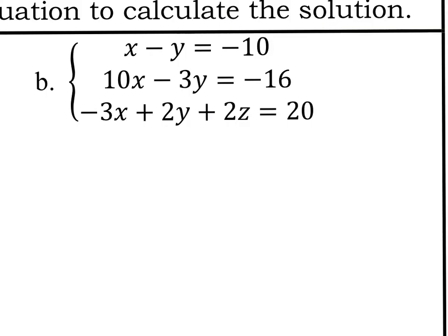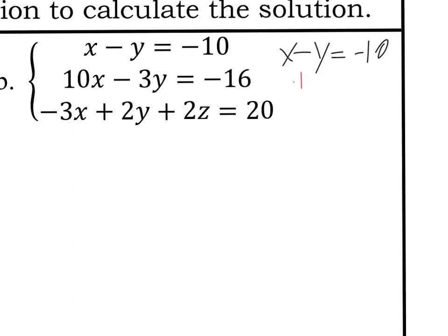So for number two, the easiest thing to start off with would be to plus this y to the other side. So you have a positive x here, and that equation will be solved for x. So because I'm a math teacher, I'll show my work. I'll put plus y. And then it doesn't matter if you write negative 10 plus y, or y minus 10. I'll just write y minus 10.